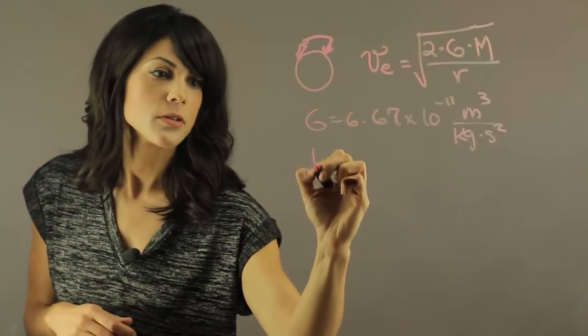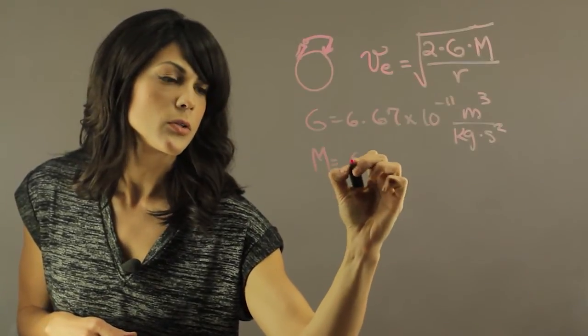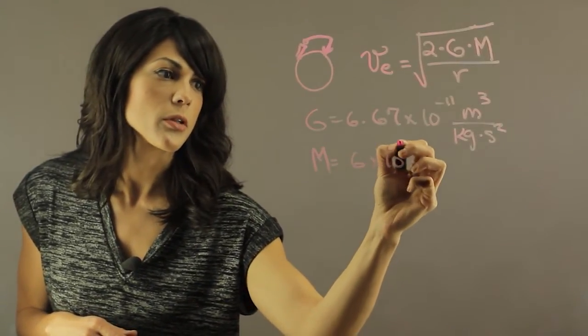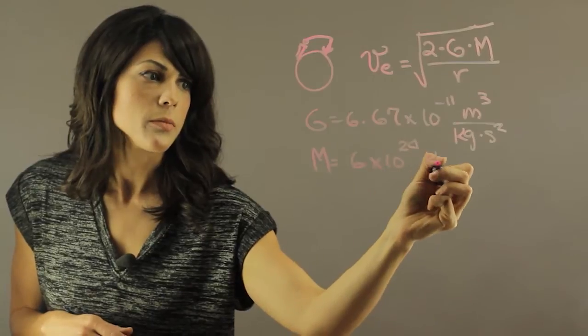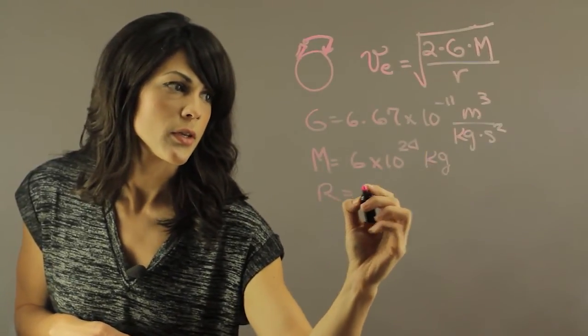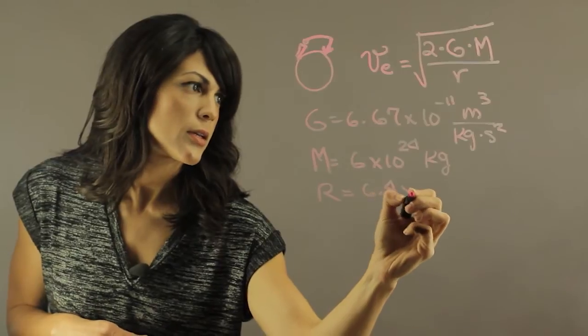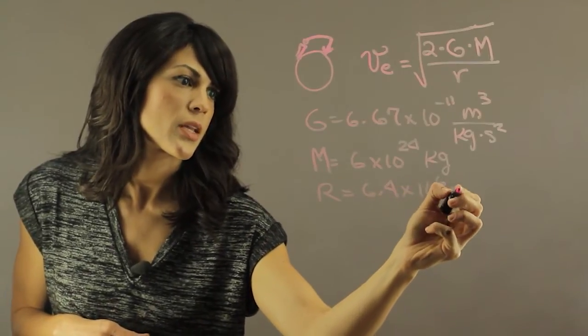And then the mass of the Earth is equal to 6 times 10 to the 24th kilograms. And then the radius of the Earth is 6.4 times 10 to the 6th meters.